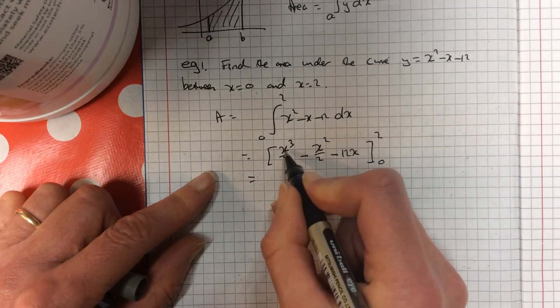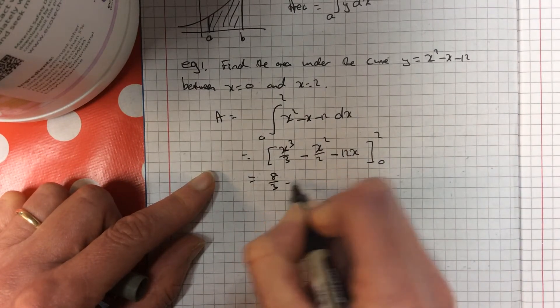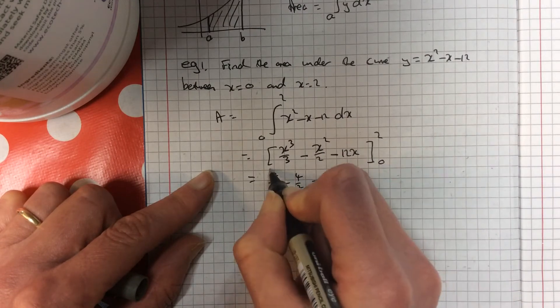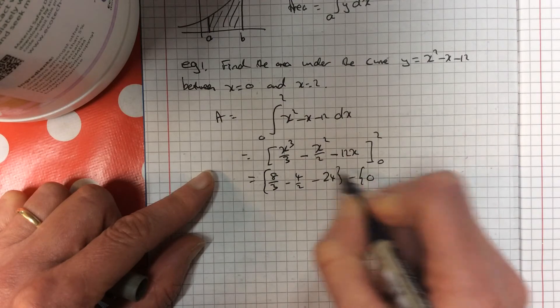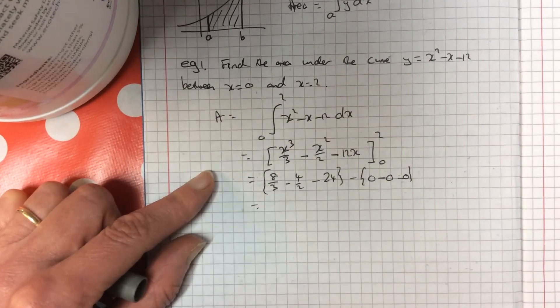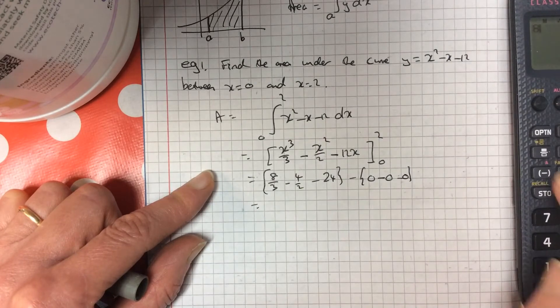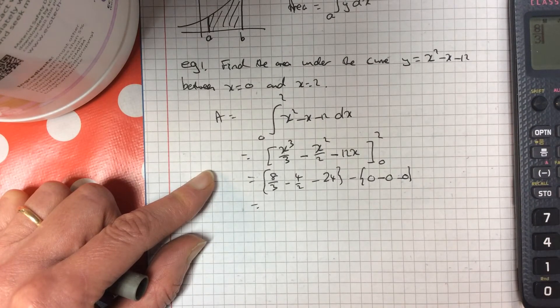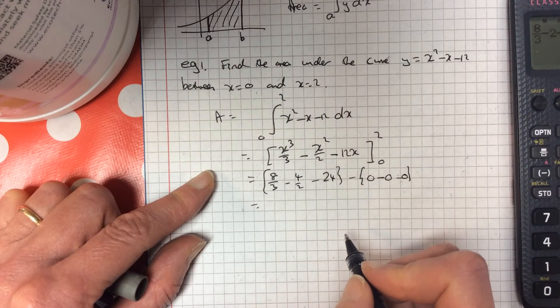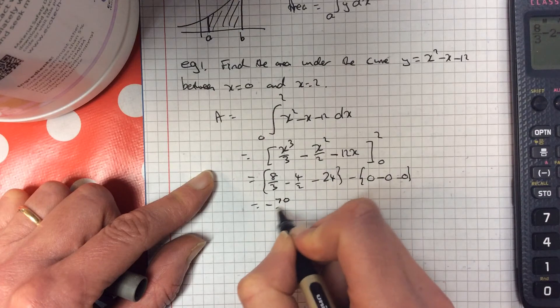So you sub in your 2. 2 cubed. 2 squared. 12 times 2. And then you sub in your 0. 0 cubed minus 0 squared minus 12 times 0. So just putting all that in your calculator, 8 over 3 minus 2, take away 24, gives you an answer of minus 70 over 3.